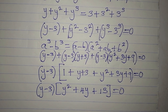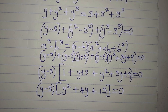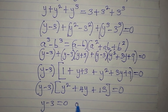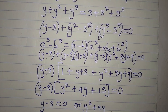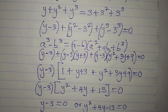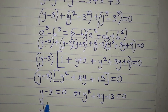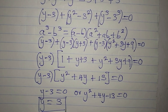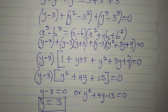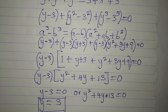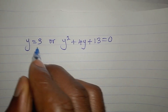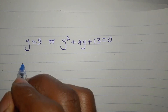Since the question asks for only real solutions, we set each factor to zero: y minus 3 equals zero, giving y equals 3; or y squared plus 4y plus 13 equals zero. Note that it is plus 13, not minus 13. y equals 3 is one solution; now let's check the quadratic.